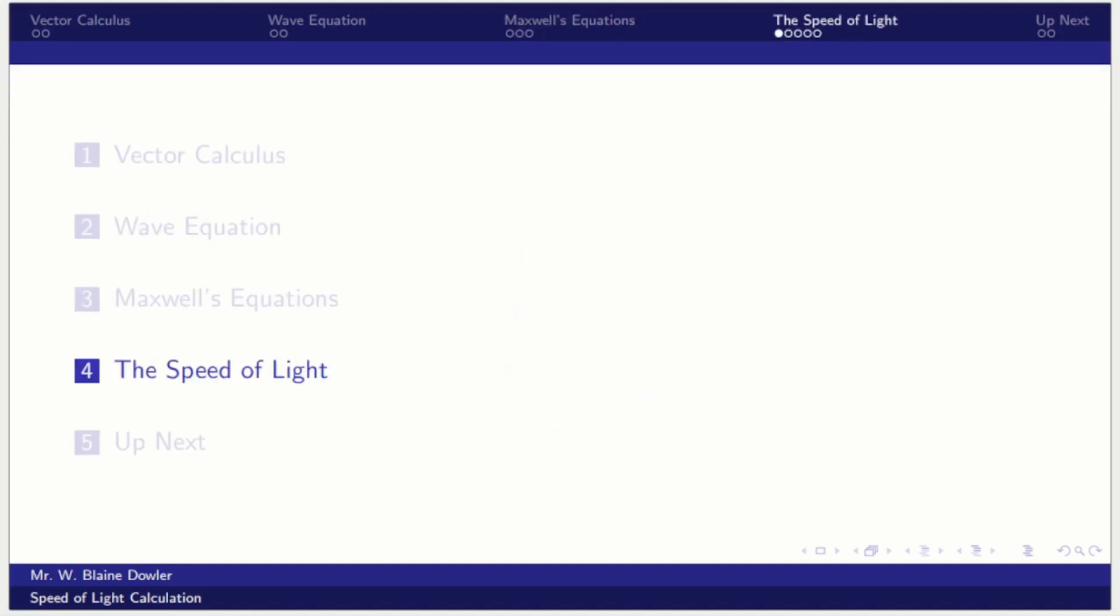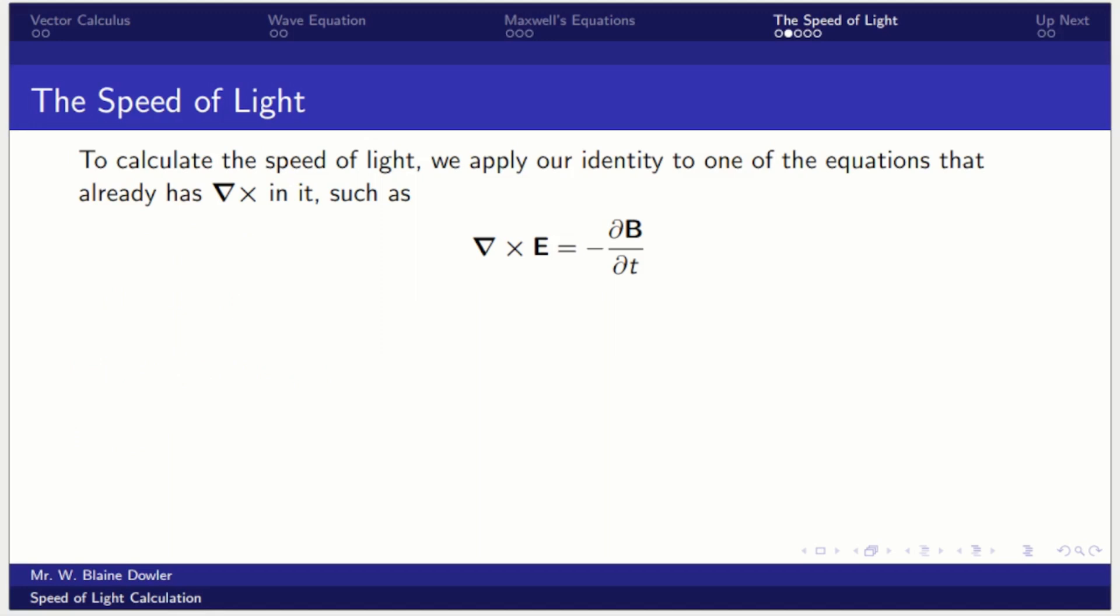So here is the meat and potatoes of it. We are going to calculate the speed of light the way James Clerk Maxwell did. We had that identity which is the curl of the curl. And we're going to take one of our two equations of Maxwell's equations that have the curl, in this case the curl of the electric field, and apply our identity to it. We take the curl of both sides. The left hand side, we just apply our identity. On the right hand side, we notice that the curl and the negative partial time derivative commute. These are compatible operators and they're all partial derivatives, so they do commute; we could flip those around.